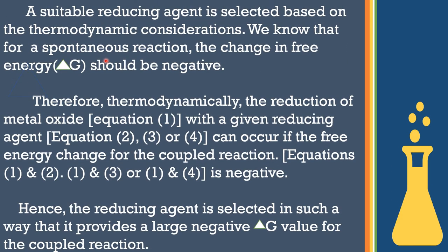The selection of a reducing agent is based on thermodynamics. According to thermodynamics, the spontaneity of a reaction is determined by three factors: change in free energy (ΔG), change in enthalpy (ΔH), and change in entropy (ΔS). If the reaction is spontaneous, then ΔG and ΔH should be negative, and ΔS should be positive.